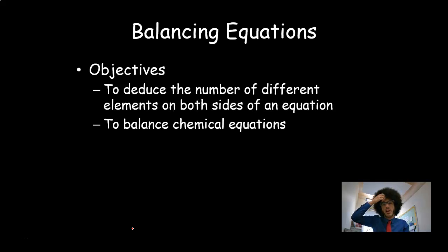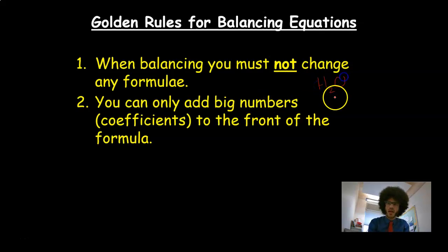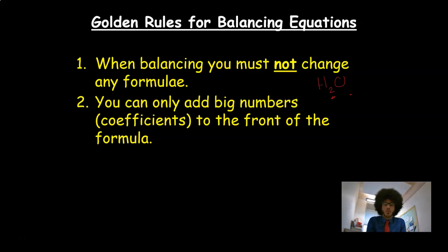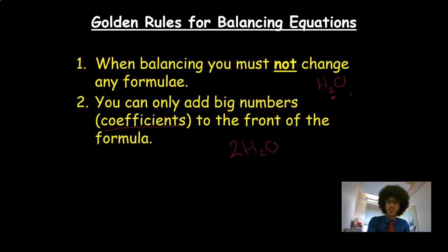The objectives of this video are to deduce the number of different elements on both sides of an equation — that's one of the things people find particularly difficult — and also to balance chemical equations. A couple of key rules: first, when balancing, do not change the formulae. If you have H₂O, you cannot change the subscripts — it stays as it is. The only thing you can do is add big numbers called coefficients to the front of the formula.